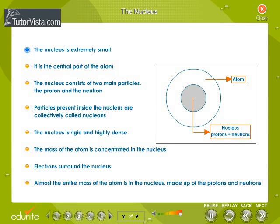The nucleus is extremely small. It is the central part of the atom. The nucleus consists of two main particles, the proton and the neutron. Particles inside the nucleus are collectively called nucleons. The nucleus is rigid and highly dense. The mass of the atom is concentrated in the nucleus. Electrons surround the nucleus. Almost the entire mass of the atom is in the nucleus, made up of protons and neutrons.